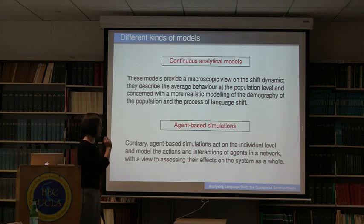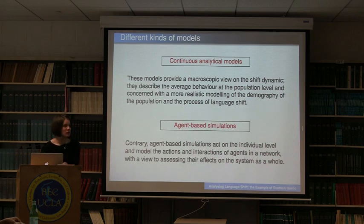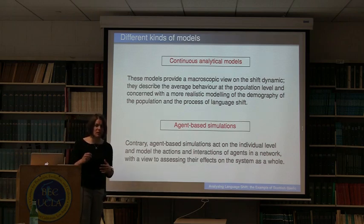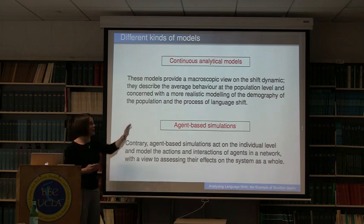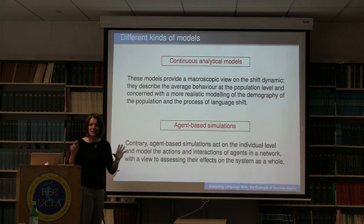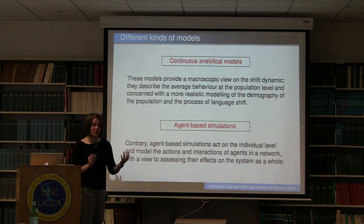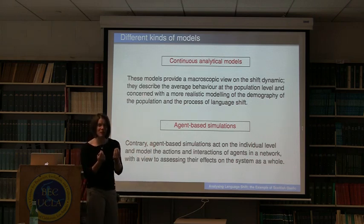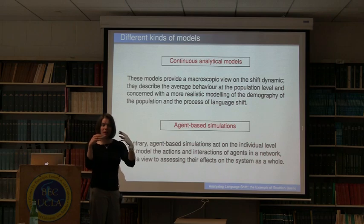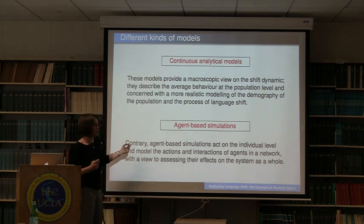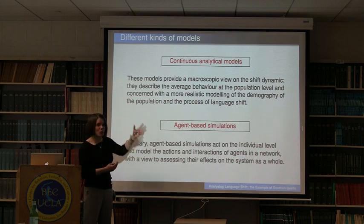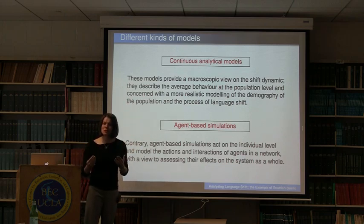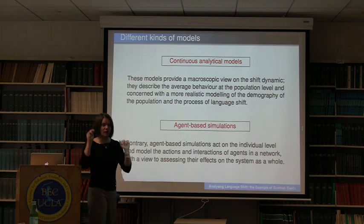I want to argue that those models should not be seen as competing. Sometimes in the literature the question is asked: what's the right model? I think it's not a very fruitful discussion because both classes of models look at the same problem from completely different angles and give us insight at different levels. Here we understand what the population is doing on average; here we understand which individual-level behavior gives rise to what population-level pattern. Setting up two models for the same problem gives us more insights than just dealing with one so-called right model.